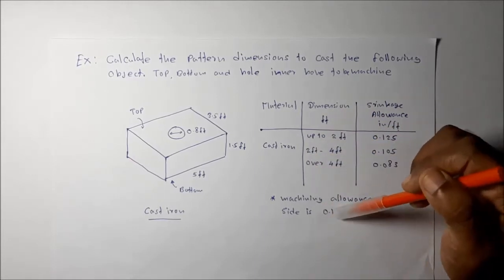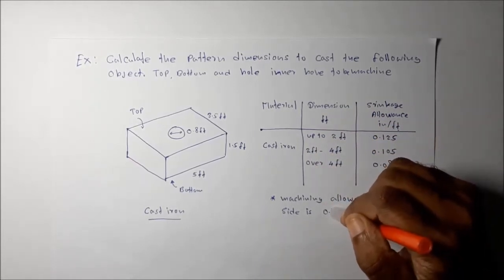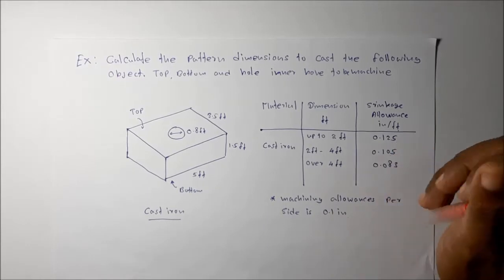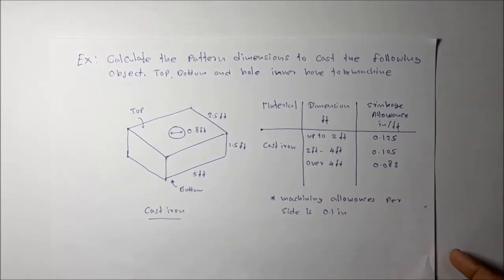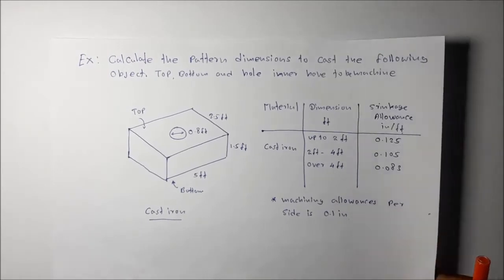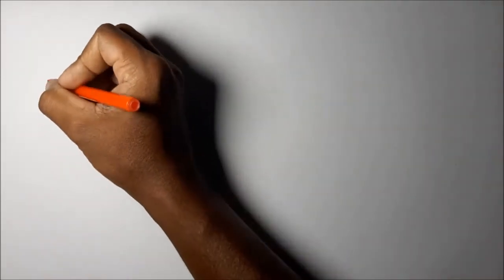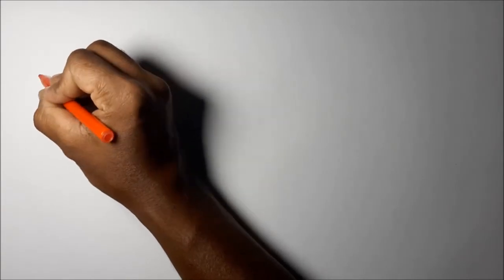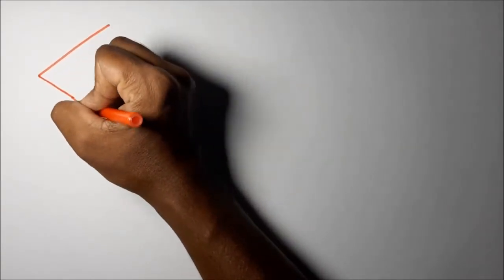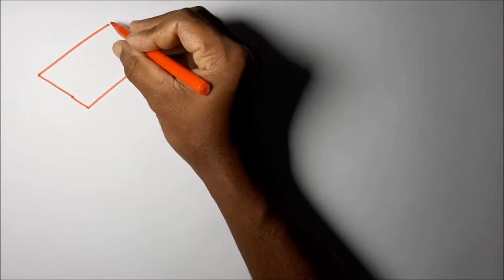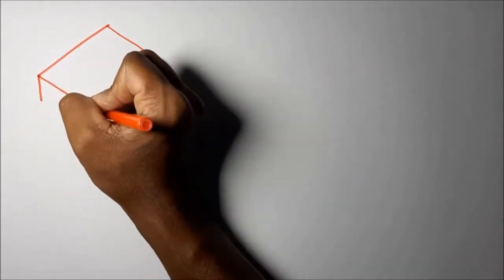First, we are going to calculate the shrinkage allowances, then we will add the machining allowances. Let me explain the theory behind this calculation before we proceed with the pattern dimensions.